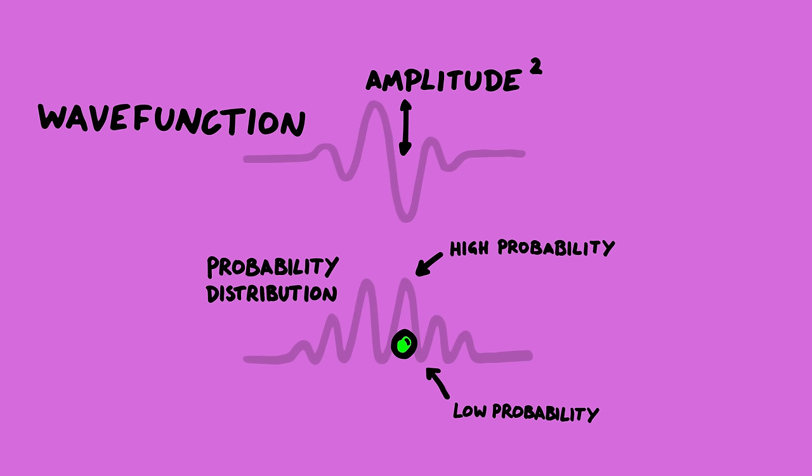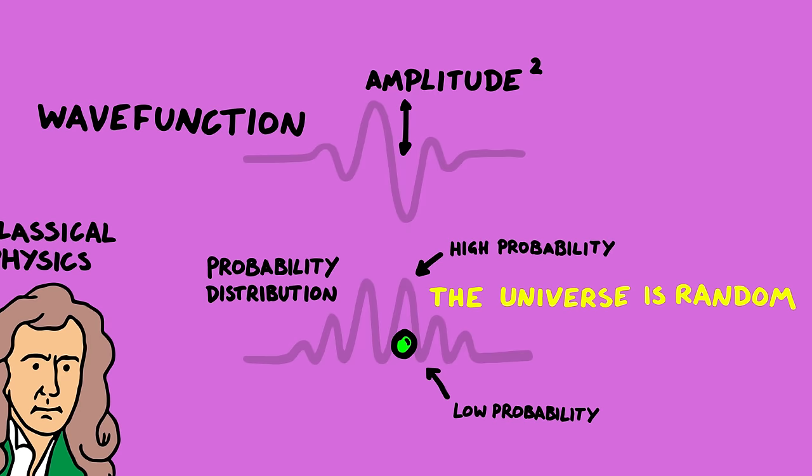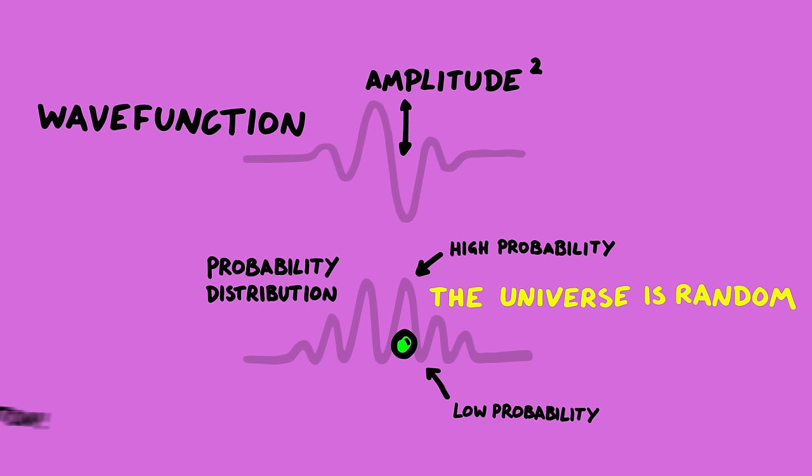So with quantum physics we don't know anything with infinite detail. We can only predict probabilities that things will happen. And it looks like this is a fundamental feature of the universe, which was quite a departure from the clockwork deterministic universe in classical physics, the kind of thing Newton derived. This wave function model predicts what subatomic particles will do incredibly well, but weirdly we've got no idea if this wave function is literally real or not.